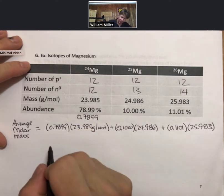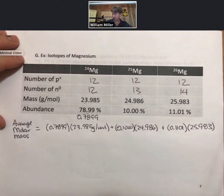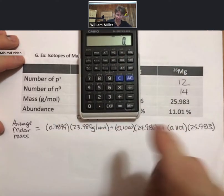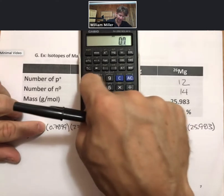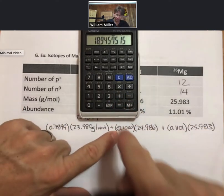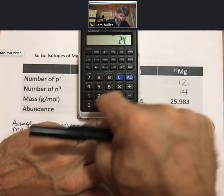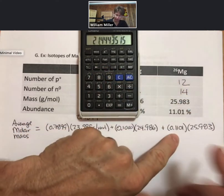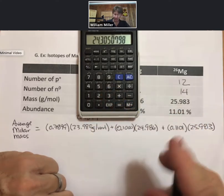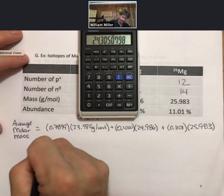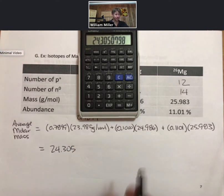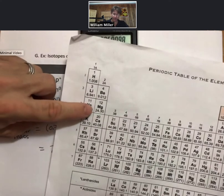So now I need to do the math. 0.7899 times 23.985 plus 0.1 times 24.986 plus 0.1101 times 25.983. And I get an average molar mass of all these equal to 24.305, which is very close to the number on the periodic table, 24.30.